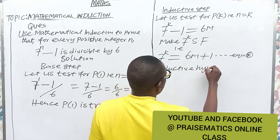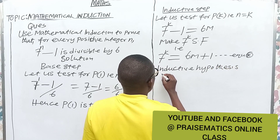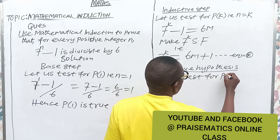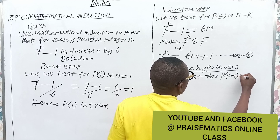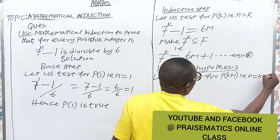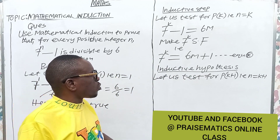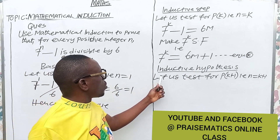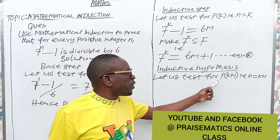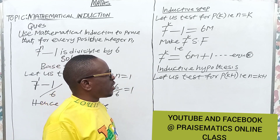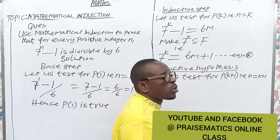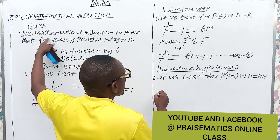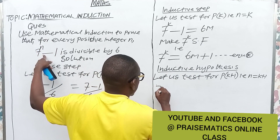Now Case 3 — the inductive hypothesis. Let us test for p(k+1), that is n equals k plus 1. From the equation, anywhere you see n, call it k plus 1. So we have 7 raised to power (k+1) minus 1 — is it divisible by 6? Let's say it equals 6h, where h is an element of positive integers.